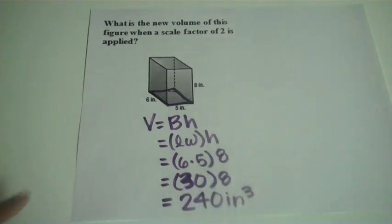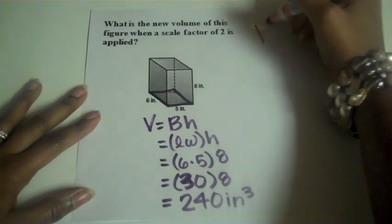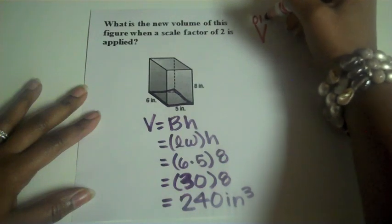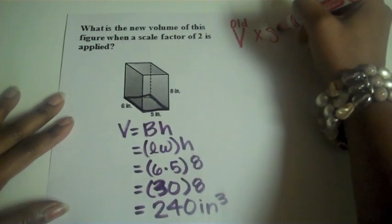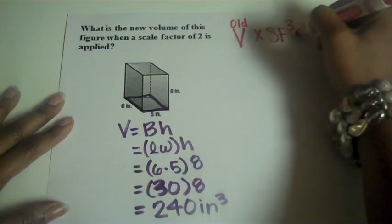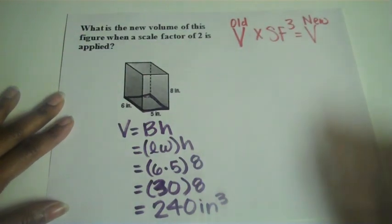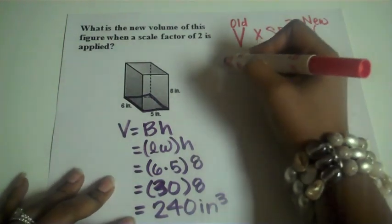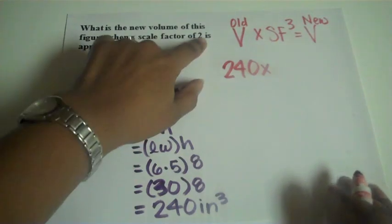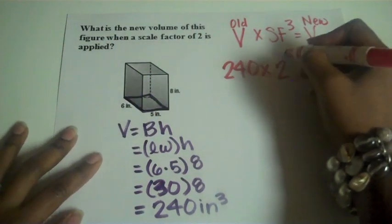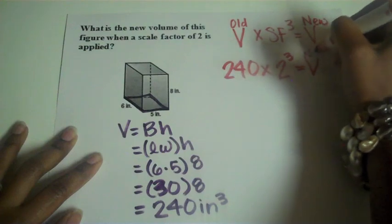Alright, so now I'm going to use my formula for proportional change. Old volume times the scale factor cubed to get my new volume. So the volume or the old volume is 240 times our scale factor of 2 cubed to get our new volume.